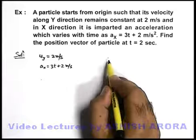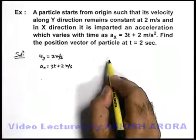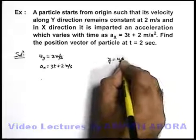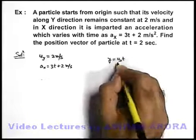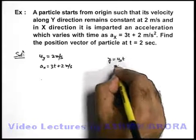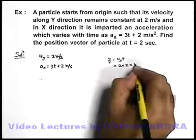Now in y direction, if we just calculate the displacement of particle, this can be written as uy into t. We are given that particle is moving in y direction with a uniform speed of 2 meters per second. So it can be written as 2 into 2, that will be 4 meters.